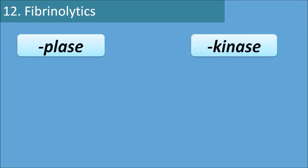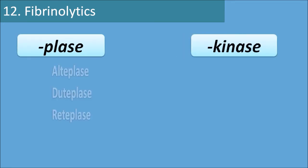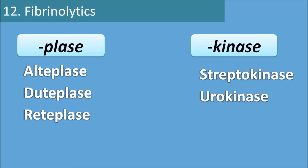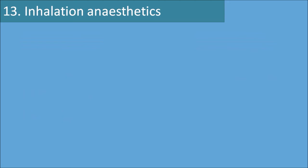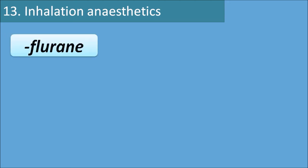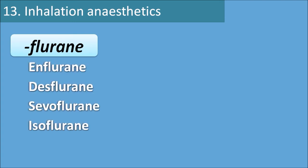The twelfth category is fibrinolytics, with the suffixes 'plase' and 'kinase'. Drugs with -plase include alteplase, duteplase, and reteplase. Drugs with -kinase include streptokinase and urokinase. The thirteenth category is inhalation anesthetics, with the suffix 'flurane'. Examples include enflurane, desflurane, sevoflurane, and isoflurane. Exceptions include halothane and nitrous oxide, which have different suffixes.